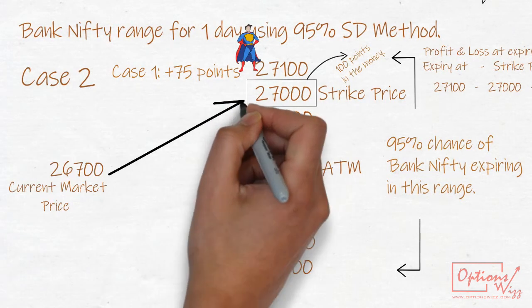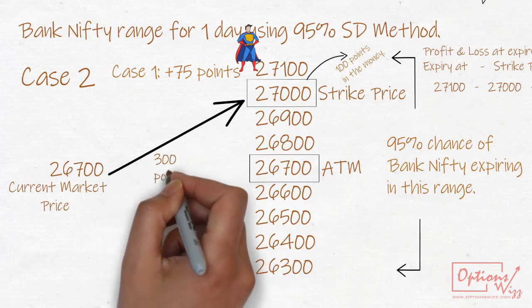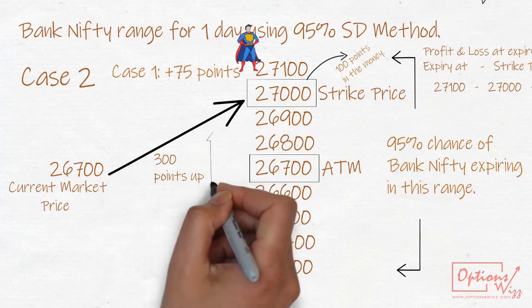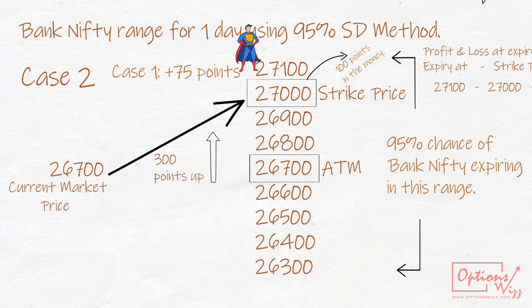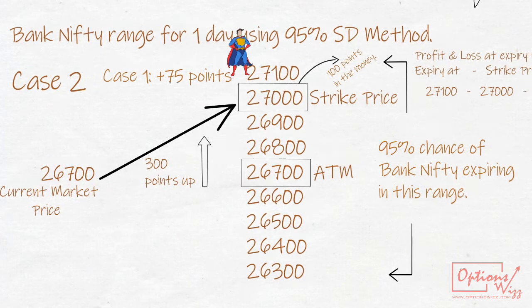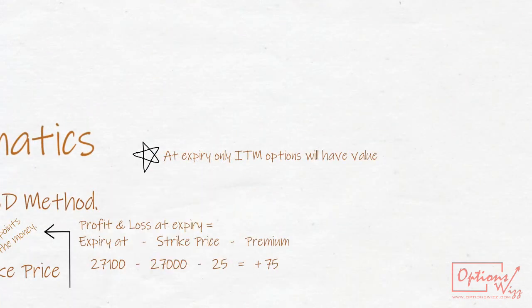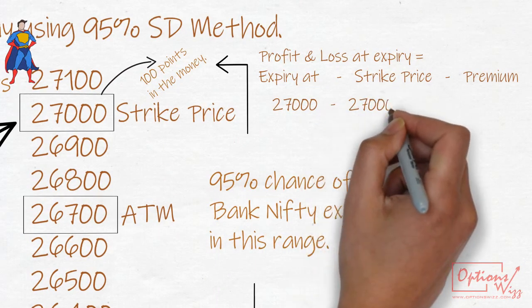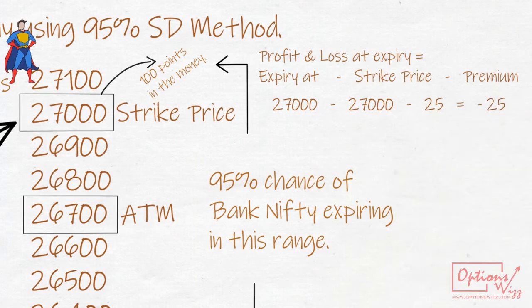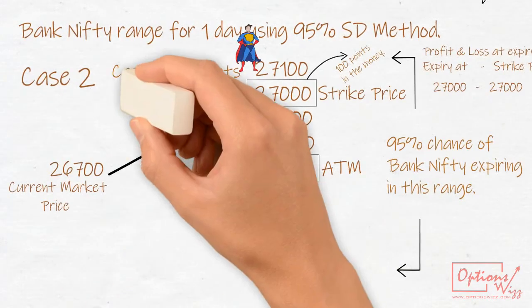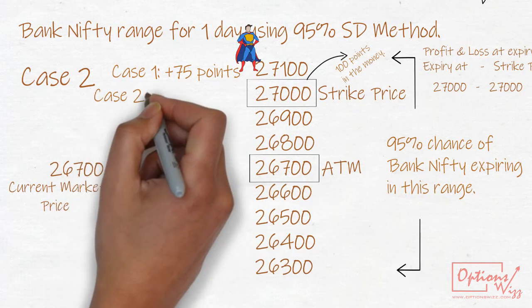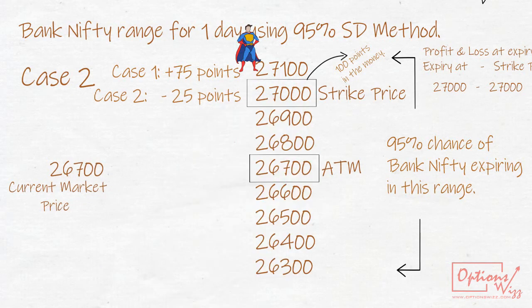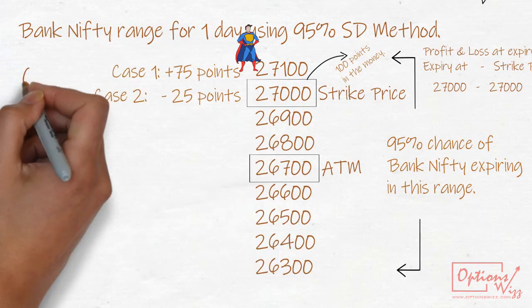Case 2: Bank Nifty expires at 27,000, at the money. In this case, 27,000 call will be at the money and will have no value. Remember, at expiry, only ITM options will have a value. P&L at expiry will be negative 25 points.